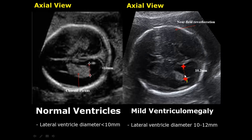Our first case is ventriculomegaly — the abnormal dilatation of the lateral ventricles. The diameter of the lateral ventricles must be less than 10 millimeters. The choroid plexus normally occupy the majority of the space and produce cerebrospinal fluid.